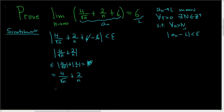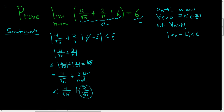This next inequality is a little bit tricky. We want to be able to write everything with the same denominator. So what we'll do is change this n to a square root. So this piece stays the same — 4 over the square root of n — and this becomes plus 2 over the square root of n. By taking the square root of n, we make the denominator smaller, therefore this fraction is bigger than the original. Now this is equal to 6 over the square root of n, because 4 plus 2 is 6.